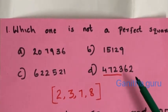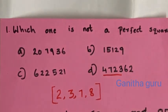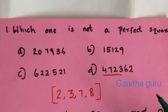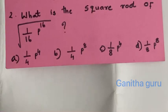This is not a perfect square, so the answer is option D.